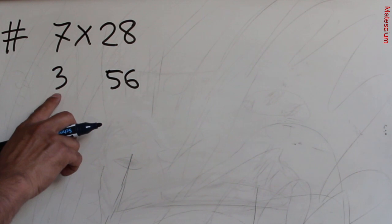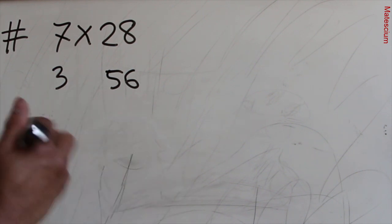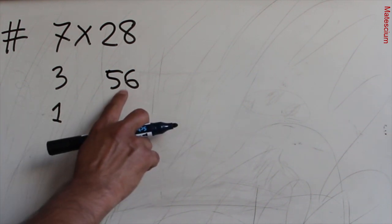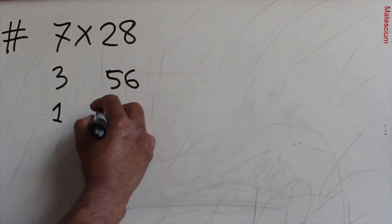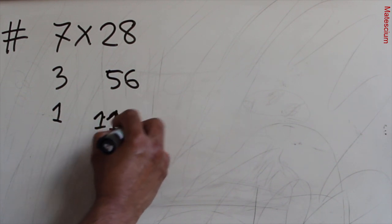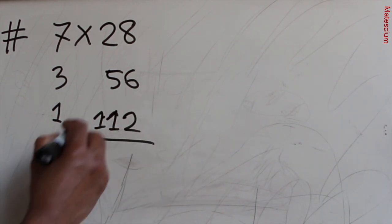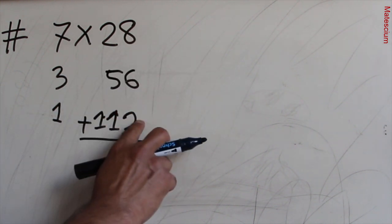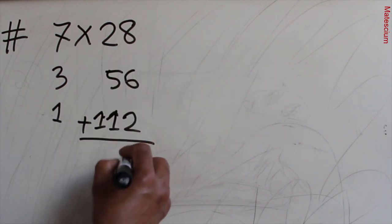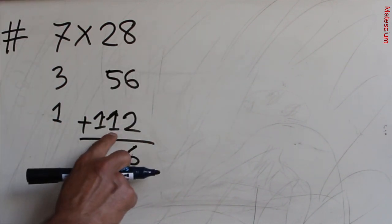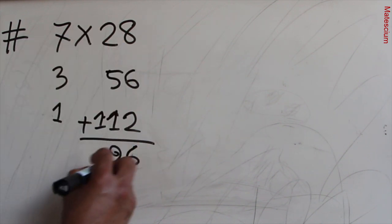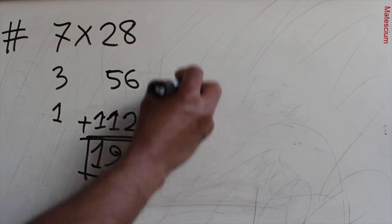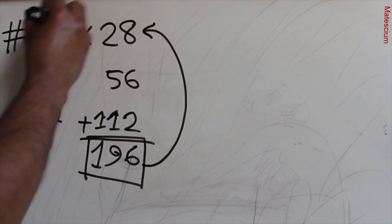Make again half of 3 — that means 1.5. Do not consider the fraction, consider only the full number, which is 1. And make double of 56, which is 112. Now what you have to do is just add these three numbers. 6 plus 2 is 8, 8 plus 8 is 16, carry 1; 1 plus 1 is 2, 5 plus 2 is 7, 7 plus 2 is 9. That means 196 is the answer of 7 times 28.